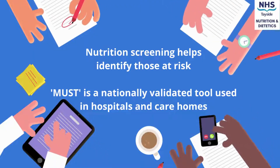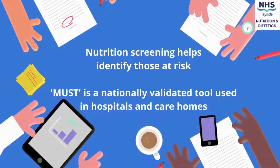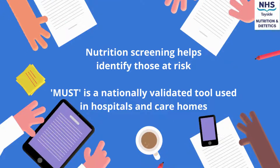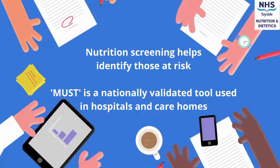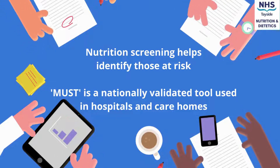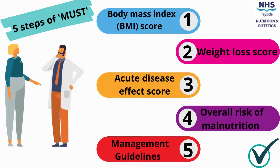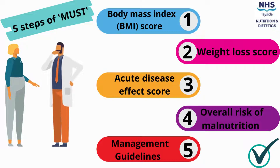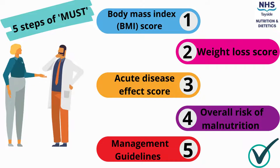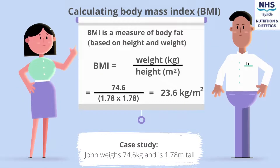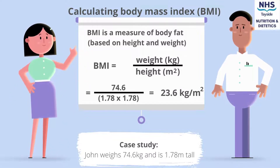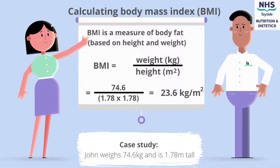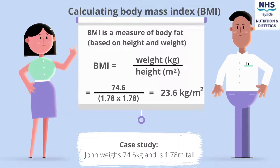Nutritional screening helps identify those at risk. MUST is a nationally validated tool used in hospitals and care homes. There are five steps to MUST, and we will go through how to calculate each step. Step one involves calculating someone's body mass index, or BMI — a measure of body fat based on someone's height and weight.